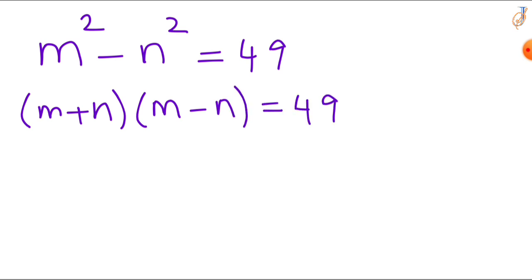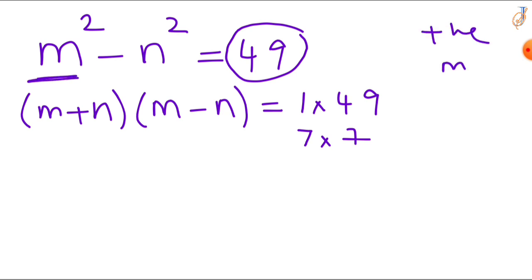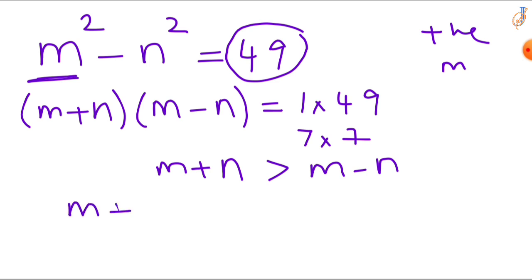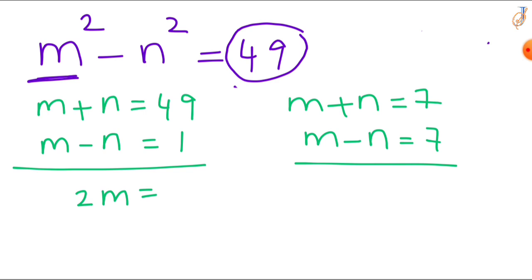Now find the factors of 49: 7 times 7 is 49, and 1 times 49 is 49. We have two options. Since 49 is positive, m must be positive, and m + n is greater than m - n. So in the first case: m + n = 49 and m - n = 1. Solving: 2m = 50, so m = 25.